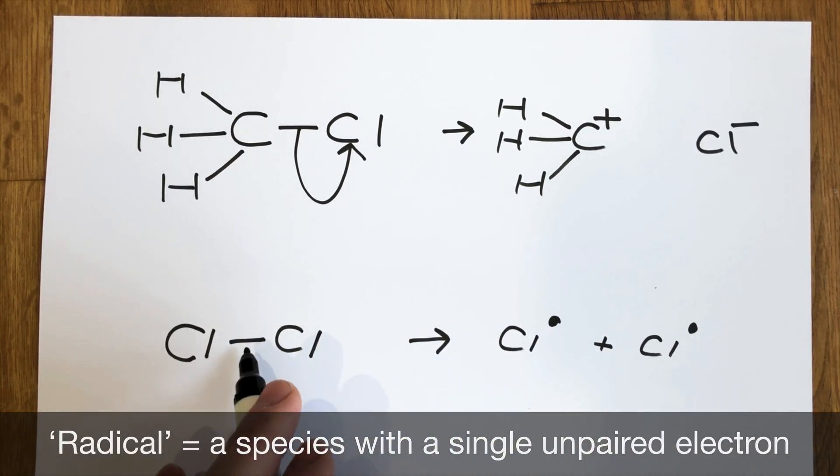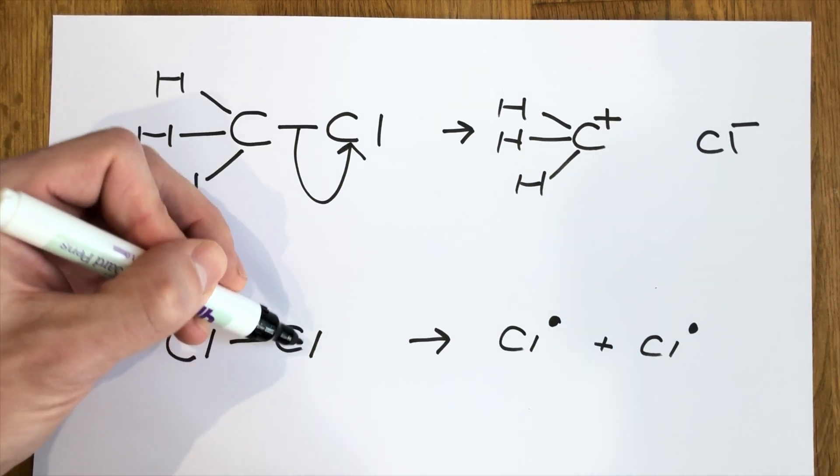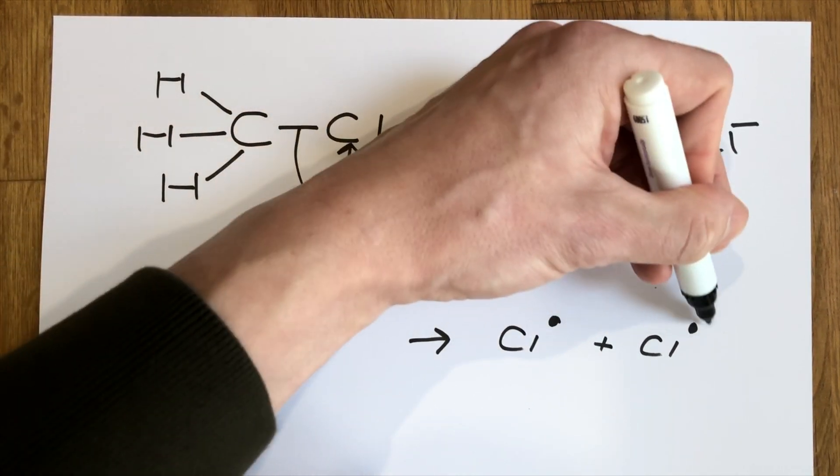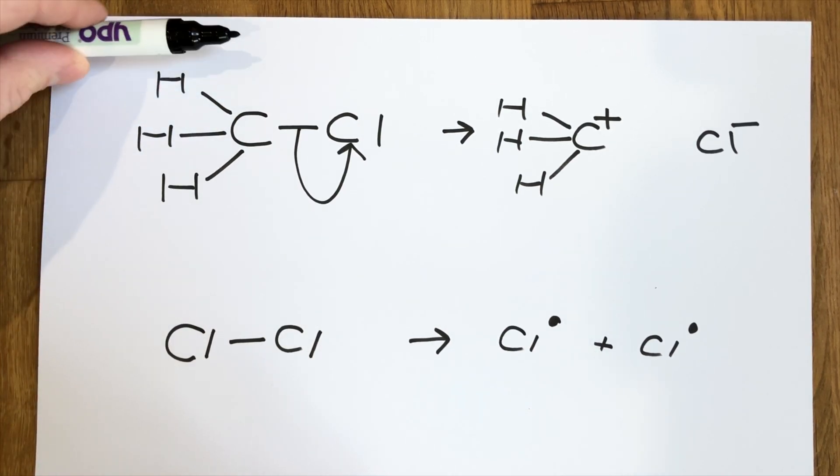That means that when this bond broke, one of the electrons in the bond went this way and the other went the other. And so here I've got two different free radicals here being formed. I don't have charges, like I saw last time, and so a way of trying to learn when each is used is quite simple.